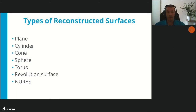Currently, C3D B-Shaper can reconstruct surfaces of the following types: plane, cylinder, cone, sphere, torus, revolution surface, and NURBS.